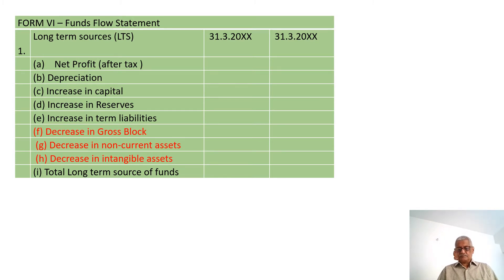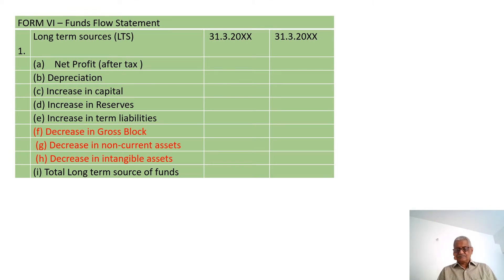Long-term sources include: net profit, depreciation, any increase in capital, any increase in reserves, any increase in term liabilities, any decrease in gross block, any decrease in non-current assets, and any decrease in intangible assets — all measured between two financial years. The sum total gives you the long-term sources of funds.